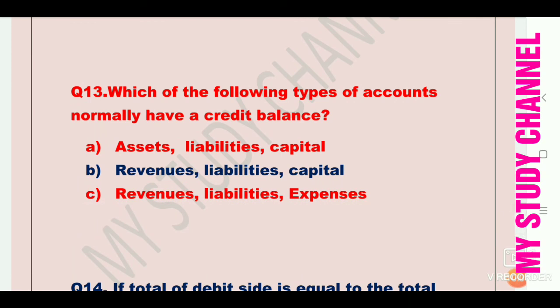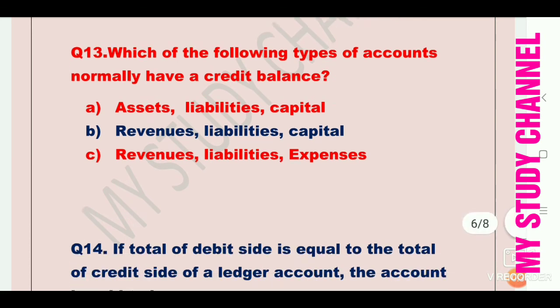Next question: which of the following types of accounts normally have a credit balance? Option A is assets, liabilities, capital. Option B is revenues, liabilities, and capital. Option C is revenues, liabilities, expenses. Option B is the right answer — revenues, liabilities, and capital type of accounts normally have a credit balance.